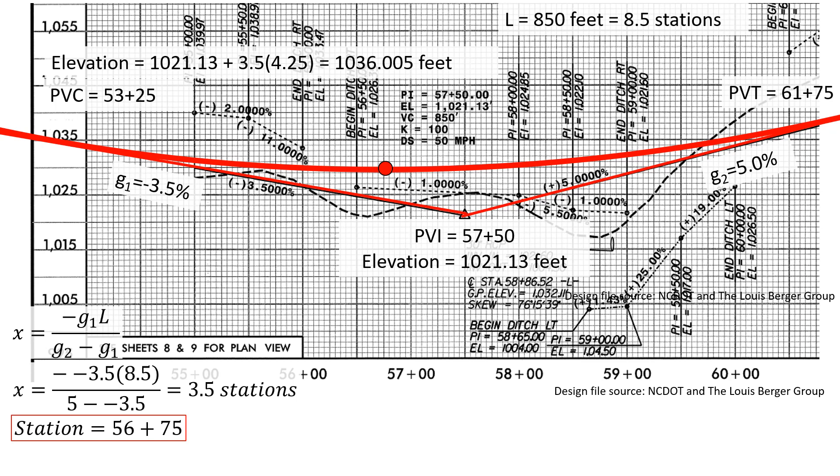And we're going to add that 3.5 stations to the station of our PVC to get a station of 56 plus 75 for our low point.